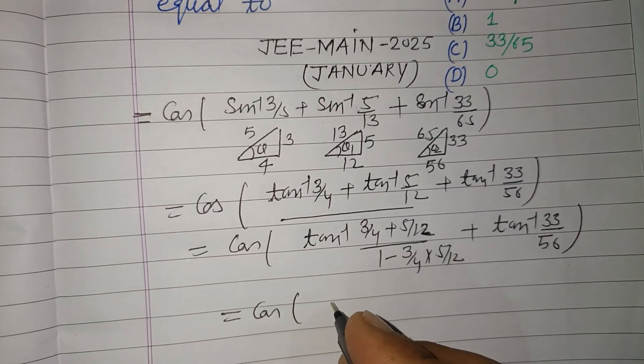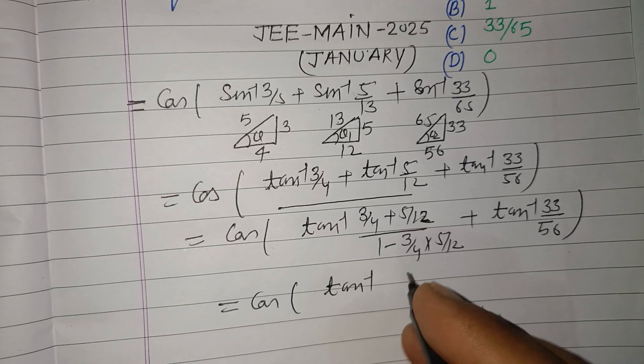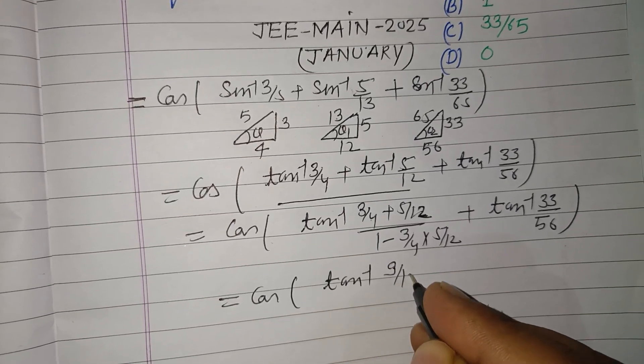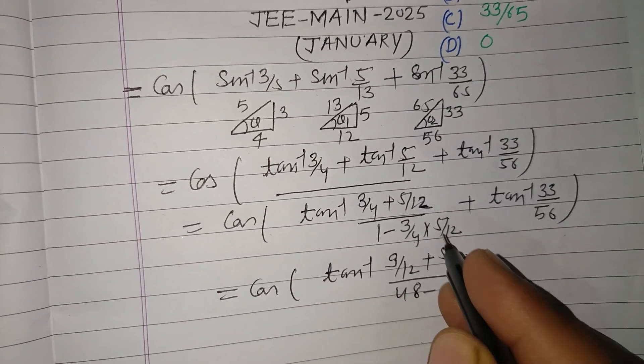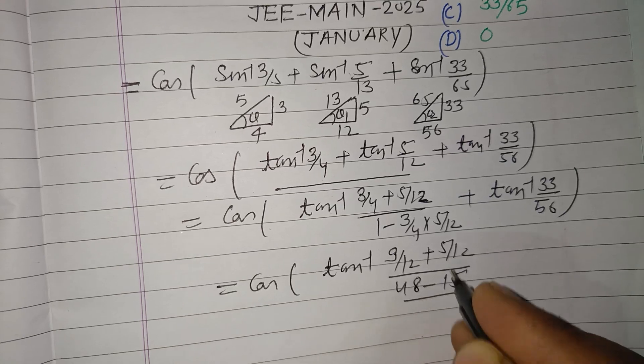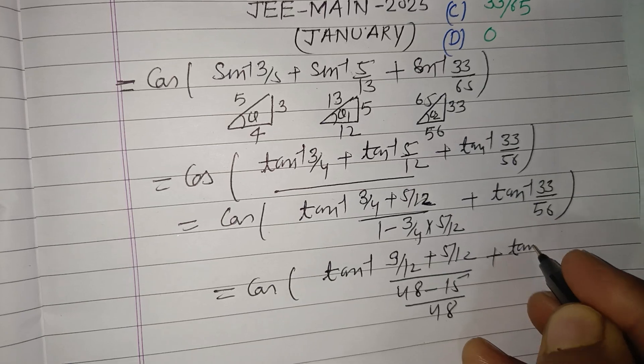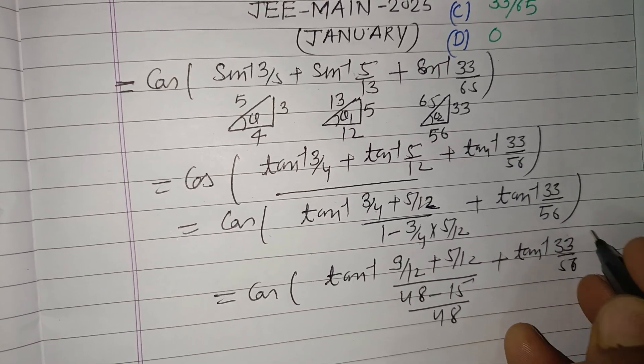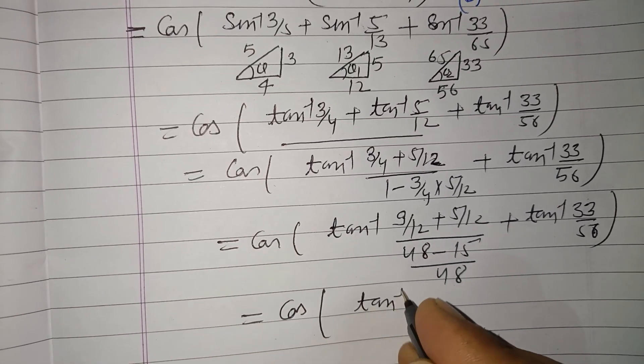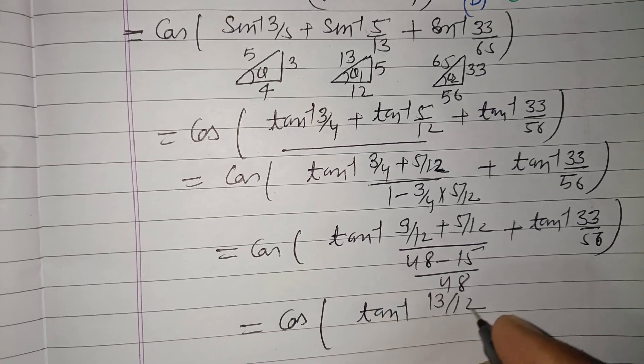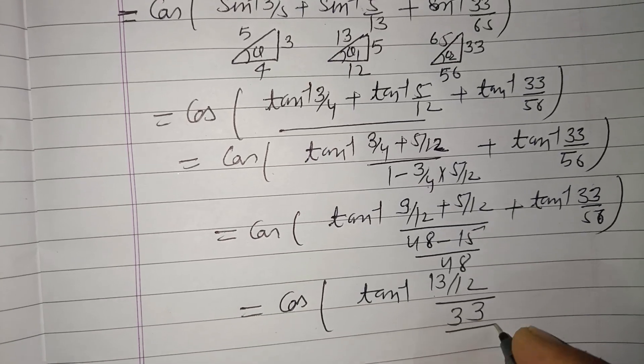Now cos tan⁻¹, this is 48 minus 15 equals 33 upon 48 plus tan⁻¹(33/56). So this is cos(tan⁻¹(33/48)) and this is 33 upon 48.